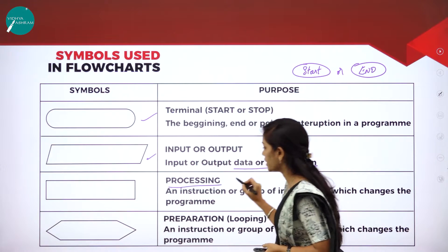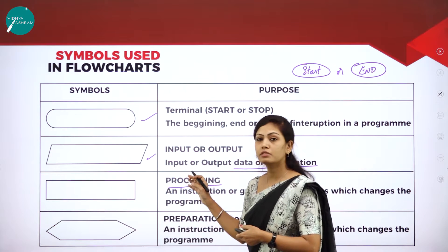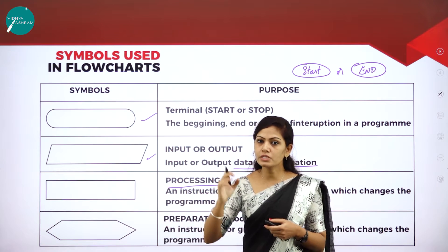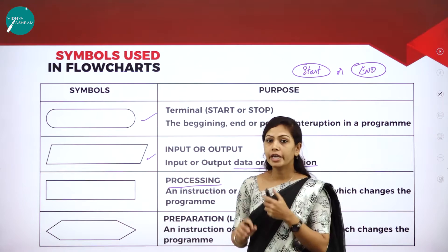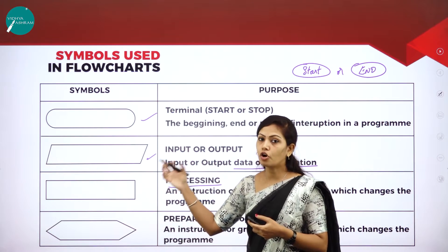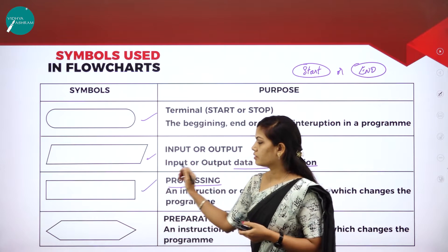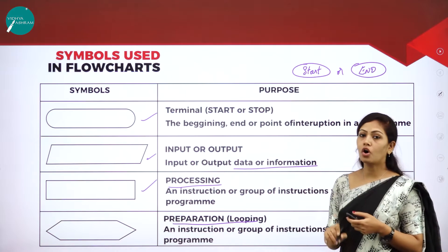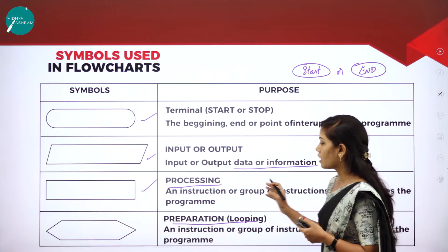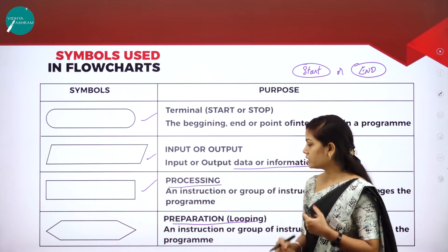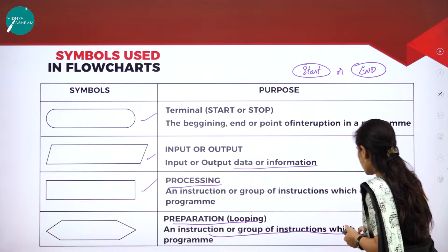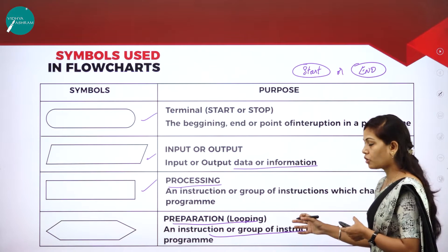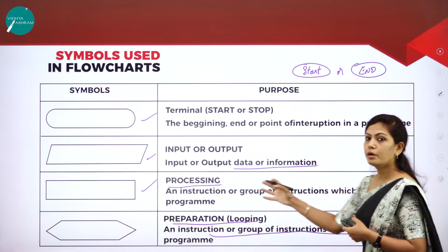The next important symbol is the rectangle, used for representing the process of the program. This symbol indicates a process like a mathematical operation — if you want to assign any mathematical logic or operation, you use this rectangle symbol. The next symbol is the hexagon for preparation or looping. Looping means a cycle — it represents an instruction or group of instructions which changes the program.